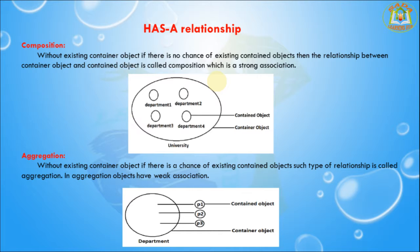See — university consists of several departments. If university is closed, automatically all departments are closed. That is composition. Here the container is university and the contained object is departments. Without an existing container object, if there is no chance of existing contained objects, the relationship is called composition.